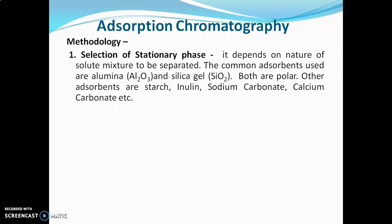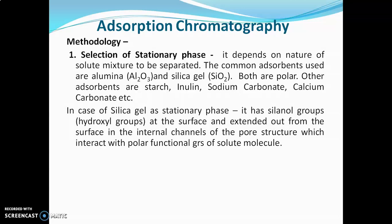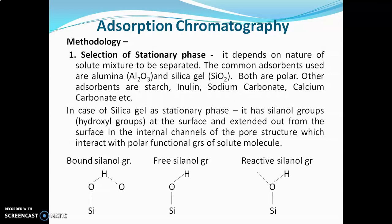The most commonly used stationary phase in adsorption chromatography is silica gel. In the case of silica gel as stationary phase, it has silanol groups, that is hydroxyl groups, at the surface, and they extend out from the surface into the internal channels of the pore structure. These silanol groups interact with the polar functional groups of solute molecules. There are three types of silanol groups: bound silanol, free silanol, and reactive silanol. The number and topological arrangement of these three types will decide the activity of silica gel. If free and reactive silanol groups are more in number, the silica gel is more active; if bound silanol is more in number, the activity of silica gel is less.